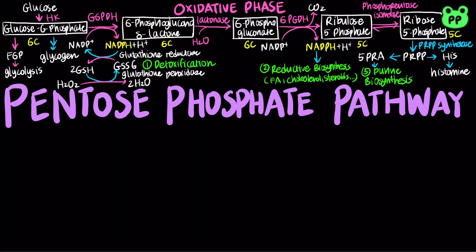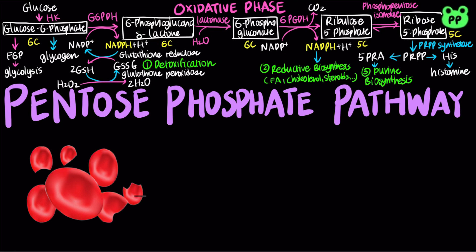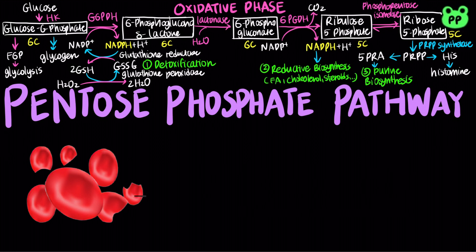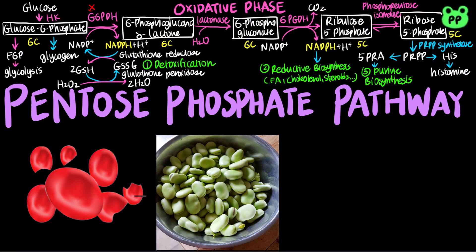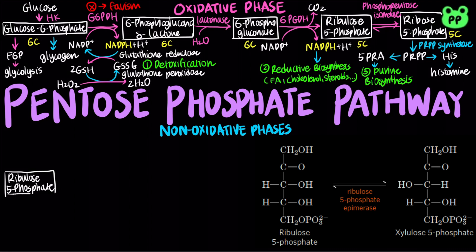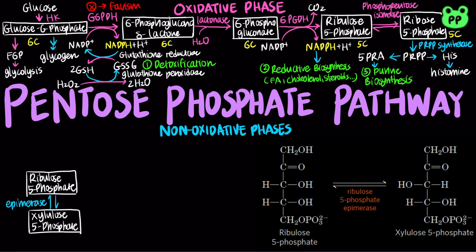Deficiency in glucose 6-phosphate dehydrogenase can result in red blood cell breakdown following a specific trigger, such as certain medications, stress, or foods such as fava beans, a condition known as favism. The second half of the pentose phosphate pathway is known as the non-oxidative phase. It mainly recycles pentose phosphates to glucose 6-phosphate. First, ribulose 5-phosphate is converted to xylulose 5-phosphate by the enzyme ribulose 5-phosphate epimerase.